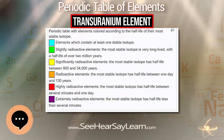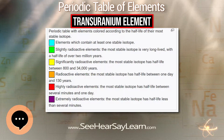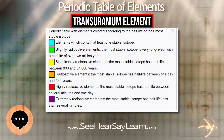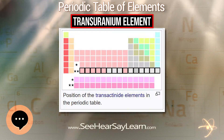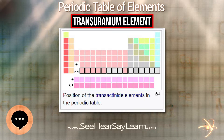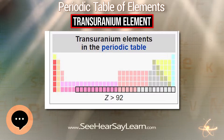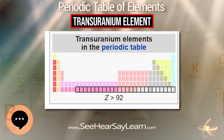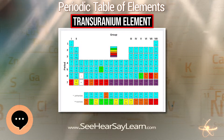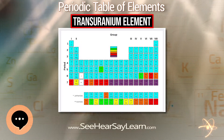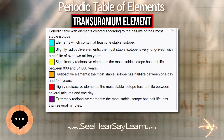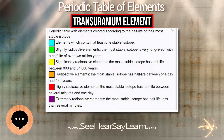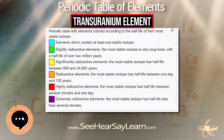Transuranic elements can be artificially generated as synthetic elements via nuclear reactors or particle accelerators. The half-lives of these elements show a general trend of decreasing as atomic numbers increase. There are exceptions, however, including several isotopes of curium and dubnium. Further anomalous elements in this series have been predicted by Glenn T. Seaborg and are categorized as the island of stability.